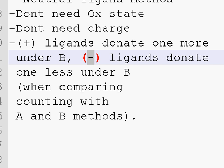So to figure out what the charge is on an electron, you kind of just have to look at a table. So for instance, carbonyl is always two, chlorine counts as two under A, but only counts as one under B. All the halogens actually are two under A and one under B.